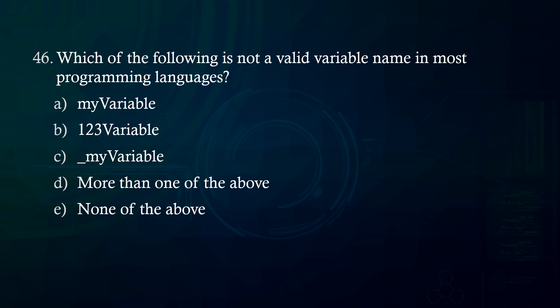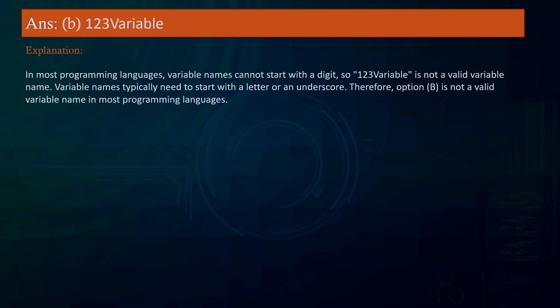Which of the following is not a valid variable name in most programming languages? A. My_variable B. 123variable C. _my_variable D. More than one of the above E. None of the above. Answer: 123variable. Explanation: In most programming languages, variable names cannot start with a digit, so 123variable is not a valid variable name. Variable names typically need to start with a letter or an underscore. Therefore, option B is not a valid variable name in most programming languages.